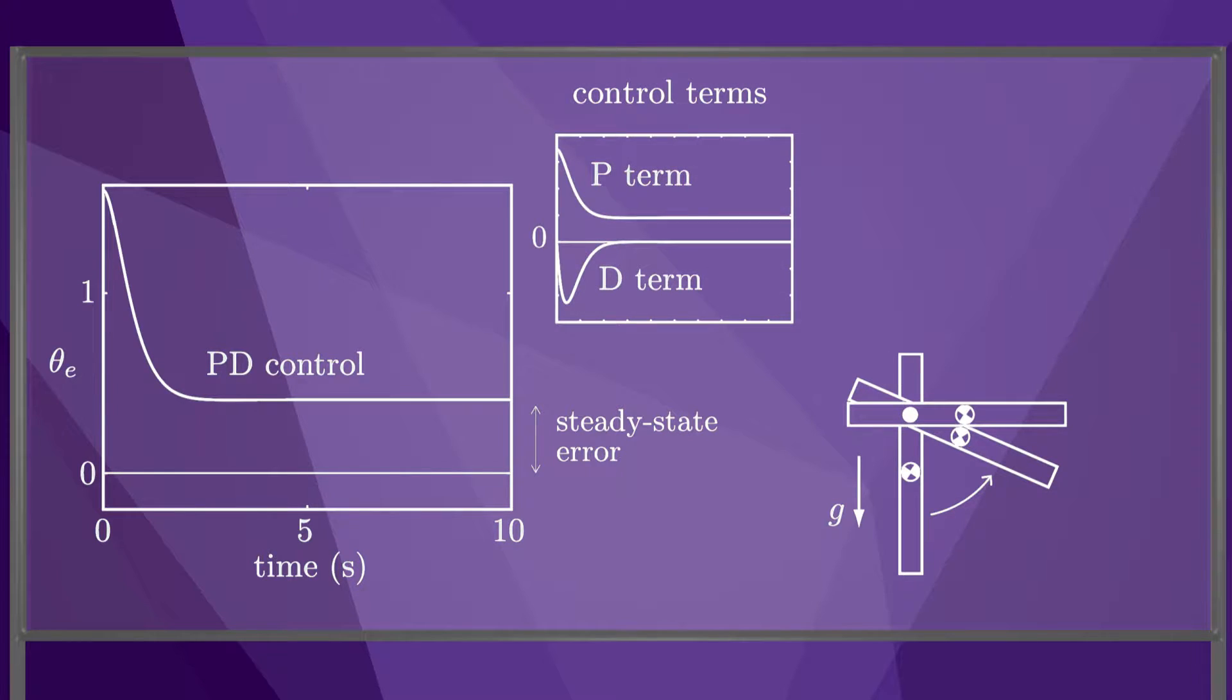If we plot the torque due to the proportional term and the torque due to the derivative term, the derivative term goes to zero in steady-state, while the proportional term provides the torque that holds the arm at its position in gravity. The point is that there must be error for the controller to provide torque in steady-state, and therefore the steady-state error cannot be zero.